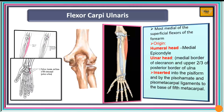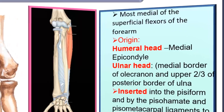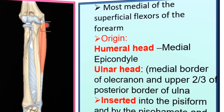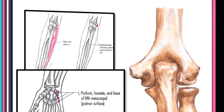We'll look at flexor carpi ulnaris. It is the most medial of the superficial flexors of the forearm. Starting with the origin, it has additional points of origin beyond the common point of origin for all the superficial flexors. These two points are the humeral head and the ulnar head. The humeral head comes from the medial epicondyle, which is the common point of origin for all the superficial flexors.